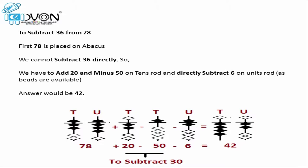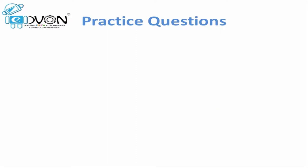Let's take this example on our fingers as well. We place 78 on our hands. To subtract 36, we only have 2 fingers on the left hand equal to 20 and the thumb equal to 50, so we cannot directly subtract 30. We apply the formula on the left hand: add 20 by opening 2 more fingers, minus 50 by closing the thumb, and directly subtract 6 on the units hand. As a result we get 4 fingers on the left hand and 2 fingers on the right hand, representing the value 42. Our answer is 42.